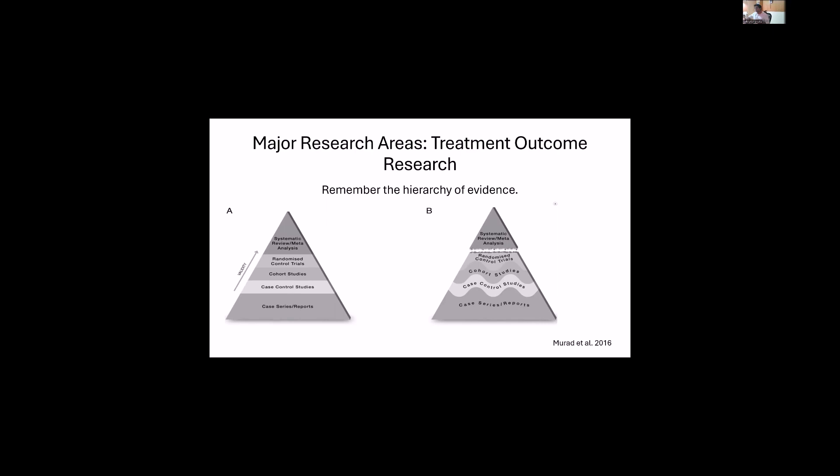Looking at treatment outcome research — there is a hierarchy of evidence. Systematic reviews and meta-analyses are at the top, followed by randomized controlled trials, cohort studies, case-control studies, case series, and reports. A new modification suggests disengaging systematic reviews and meta-analyses from this hierarchy because they are almost an industry now — it is garbage in, garbage out. You can ingest low-quality studies and generate a low-quality systematic review, and everyone is happy.